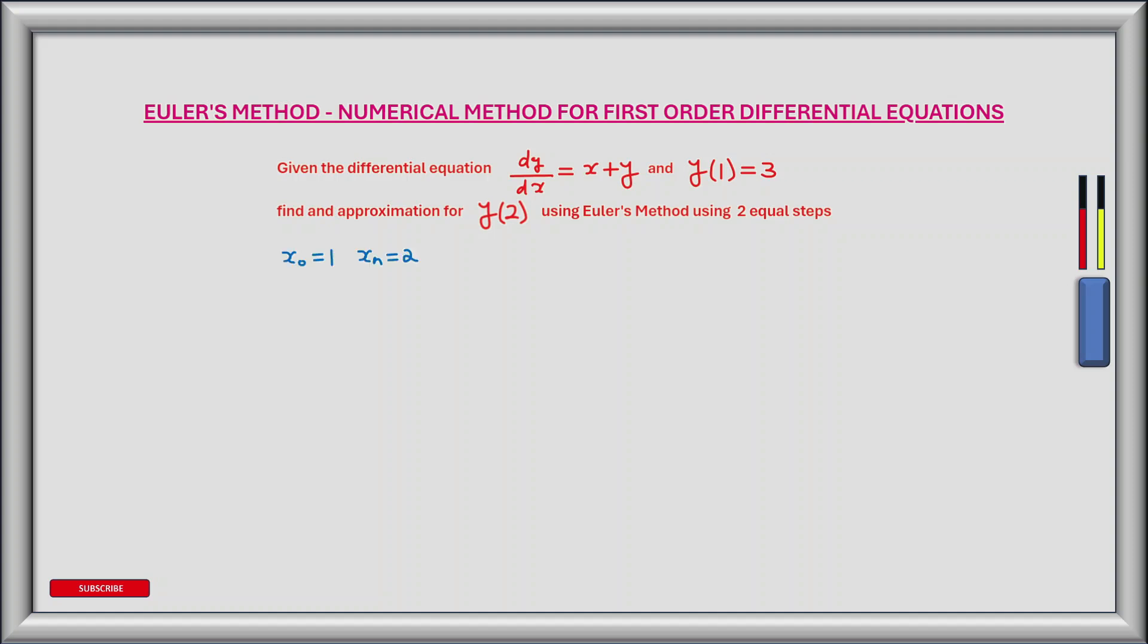So in this example our initial condition says that our x value is equal to 1. So our starting point for x is at 1, and we want to find the value of y at x equals 2.